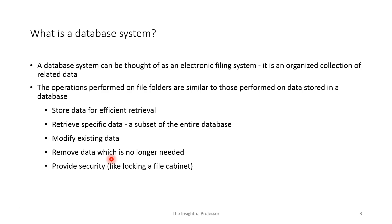So what is a database system? A database system can be thought of as an electronic filing system. Like a filing cabinet, you have an organized collection of related data. Data pertaining to one kind of individual or entity would be stored in a file folder, and the folders are arranged in a way that makes them easily accessible — perhaps alphabetically with labels — enabling efficient retrieval. You can find a particular folder without going through every single one.